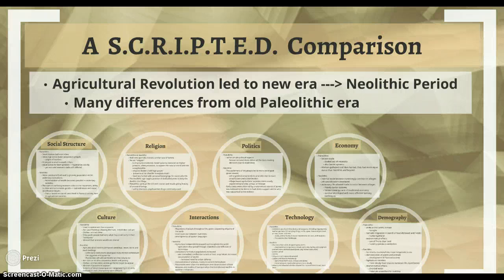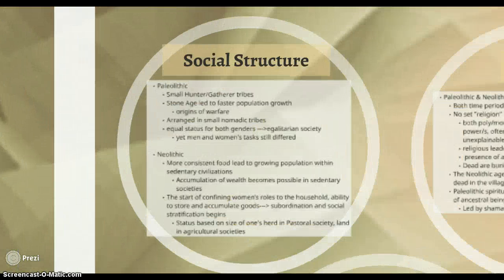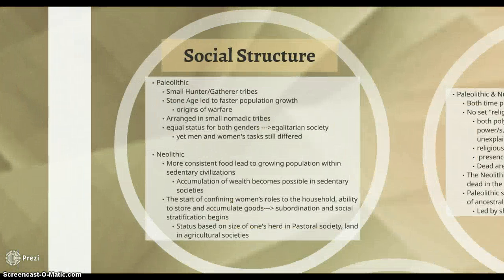Now we move on to a comparison. I want to distinguish how the Neolithic Revolution was different from the Paleolithic era. The Paleolithic era was before about 10 to 12,000 years ago, when agriculture was first developed, and it was mainly hunter-gatherers and nomads. In terms of social structure, Paleolithic people were hunter-gatherer tribes. It was basically egalitarian because there wasn't really a specification of duties and no elites had risen yet.